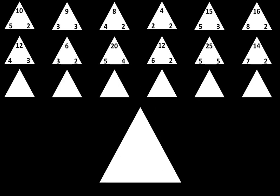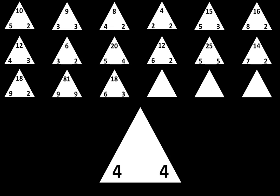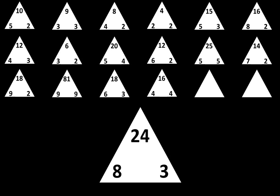Let's move to the next row. The next one is 9 times 2 is equal to 18. The next one is 9 times 9 is equal to 81. The next one is 6 times 3 is equal to 18. The next one is 4 times 4 is equal to 16. The next one is 8 times 3 is equal to 24. The next one is 6 times 5 is equal to 30.